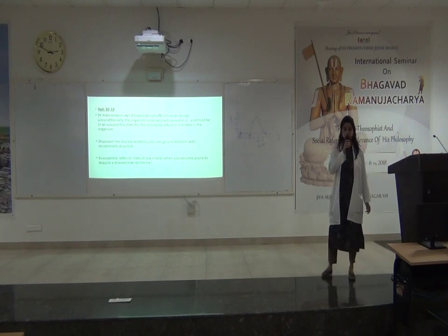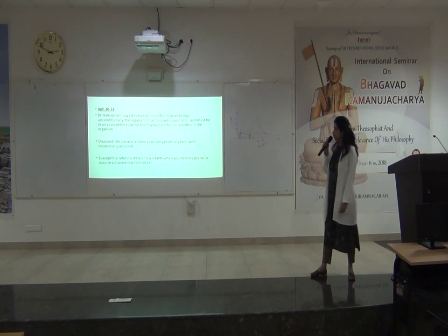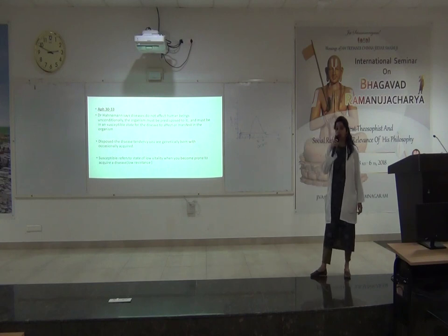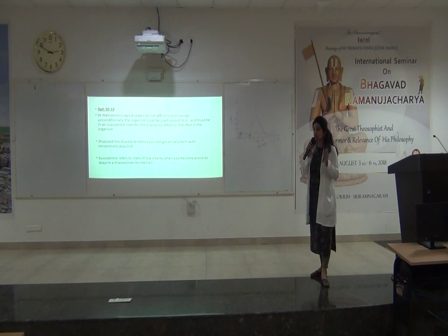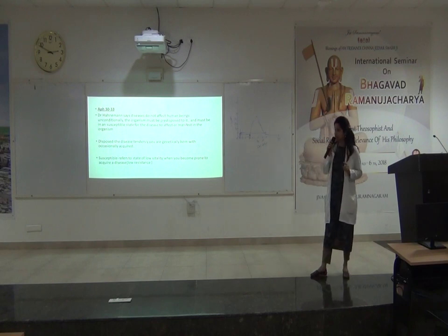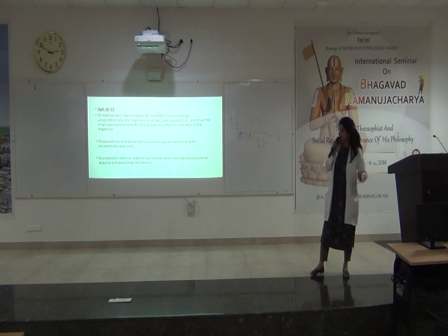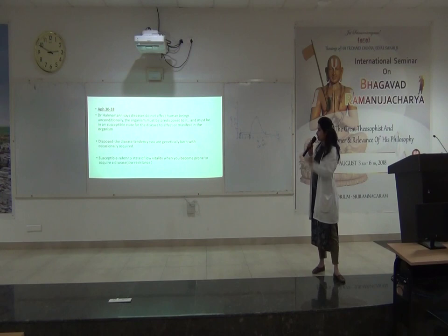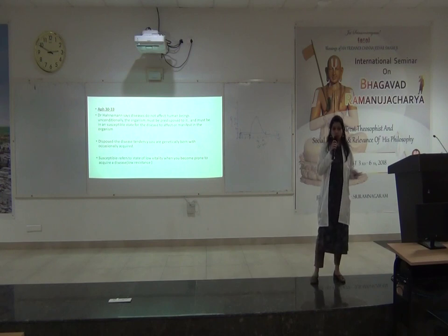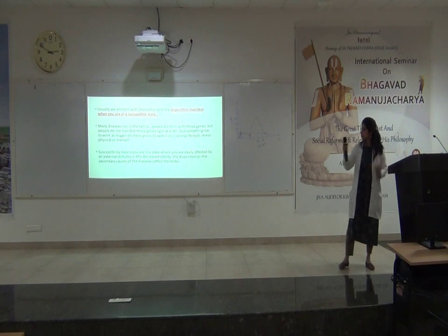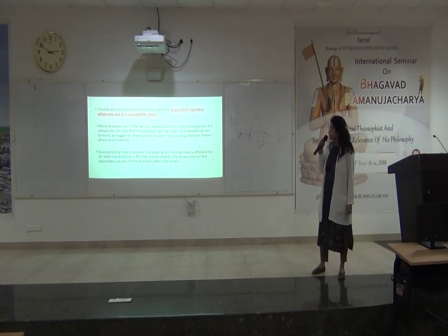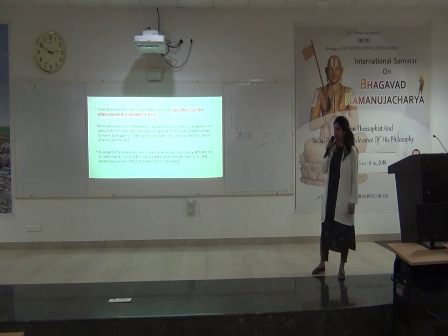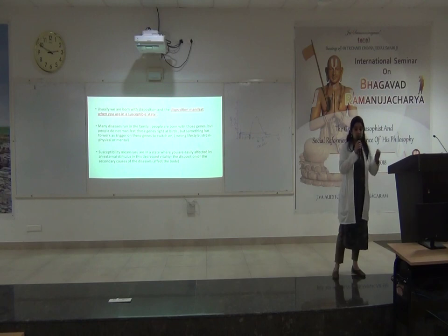Aphorism numbers 30 to 33 speak relating to susceptibility. Hahnemann says disease does not affect human beings unconditionally — the organism must be predisposed to it and in a susceptible state for the disease to affect or manifest. Disposed means we are genetically born with an acquired thing. Susceptible means a stage of lower vitality or resistance wherein you will acquire disease conditions. We are born with disposition, and disposition manifests only when you are in a susceptible state.